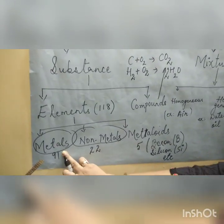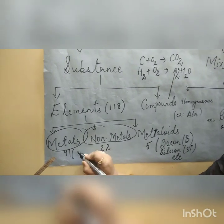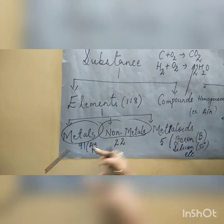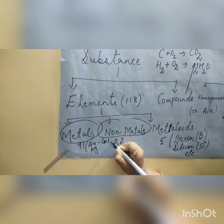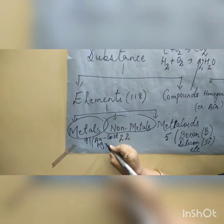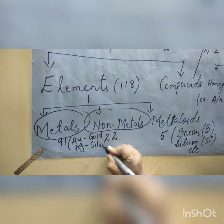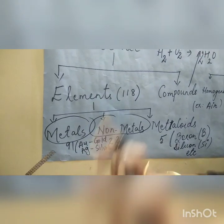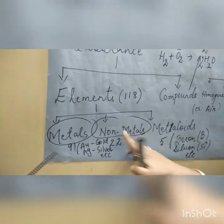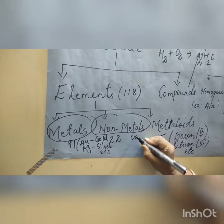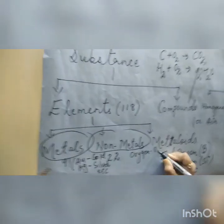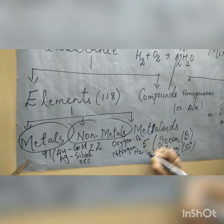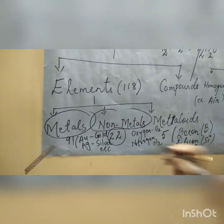Let me give you examples for metals: gold, symbol AU, and silver, symbol AG, and many more - around 91 metals in total. For non-metals: oxygen (O2), nitrogen (N2), and more - around 22 non-metals in total.